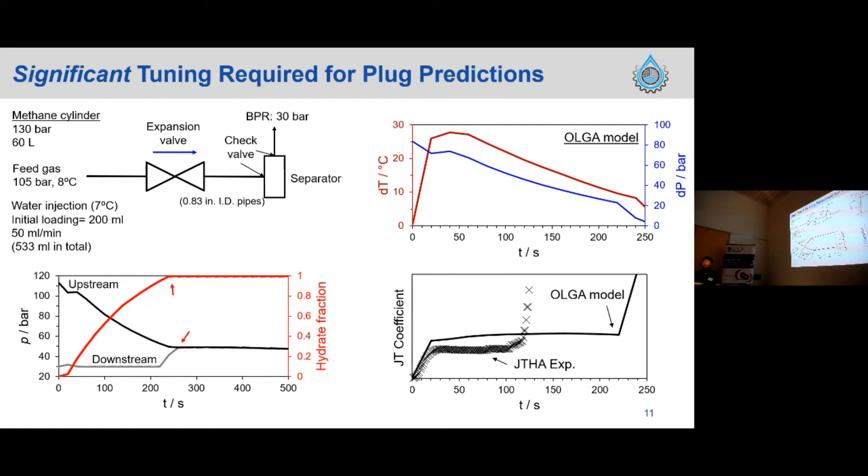Let's look at this scenario in our OLGA model. In the OLGA model, we have high-pressure gas source, which is 130 bar at 60 liters of bottle. The feed gas pressure and temperature was controlled at 105 bar and 8 degrees C, and water injection. So the upstream section, the water was injected at 200 milliliters first, and then I opened the JT valve in the model. Water injection was continued at 50 milliliters per minute, and the total water amount was 533 milliliters injected. Downstream pressure was controlled at 30 bar with the BPR. We can predict the pressure and temperature. I calculated the dT/dP for the JT coefficient.